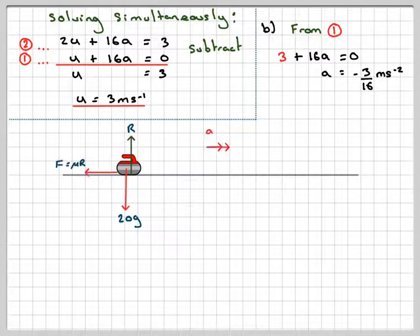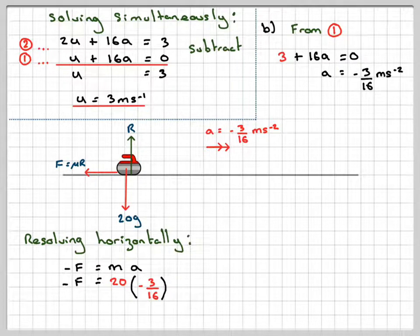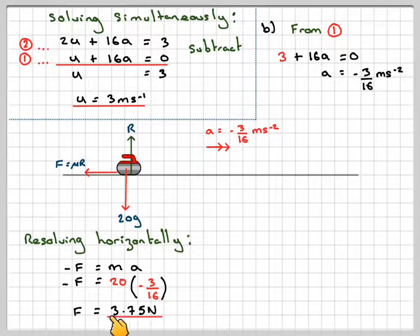Redrawing the force diagram. If we now resolve horizontally, so what we're trying to find now is the value of f. That's in the opposite direction. This is a positive direction. So we're going to have minus f is equal to mass times acceleration. So minus f will be 20 times minus 3 over 16. And that will give me that the frictional force is 3.75 newtons.